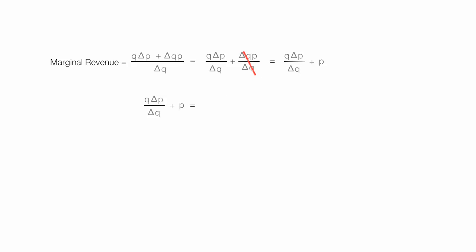I'm going to take that first fraction and multiply it times P over P — price over price — which is the same as multiplying by 1. I'll rewrite the equation with some parentheses around it. Then I factor out the price, making those terms orange so you can see them. Factoring out those two P's leaves one behind.